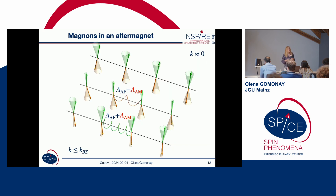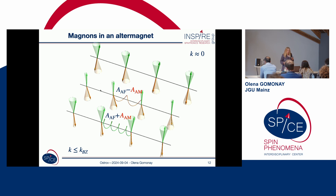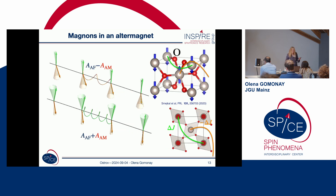What would we anticipate in the case of ultramagnets? Again, close to the gamma point the magnon is delocalized on both sublattices — nothing interesting. But closer to the Brillouin zone edge there is more localization of the excitation, and now each sublattice has a different stiffness. Intuitively, we should anticipate a splitting between magnon branches, simply because of the different stiffnesses.